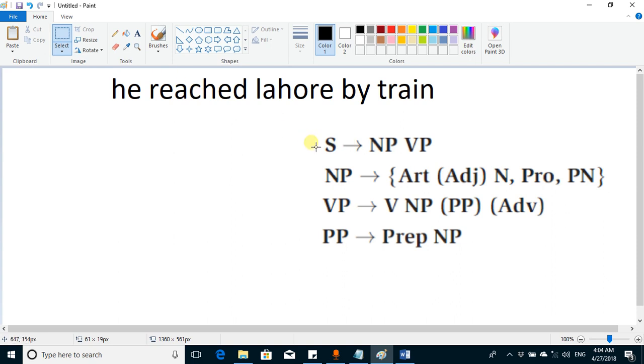And this is the English sentence. Let's parse this sentence using this CFG. This production says that the sentence—let's choose a brush here, let's choose a size—this production says that S should produce a noun phrase and a verb phrase.